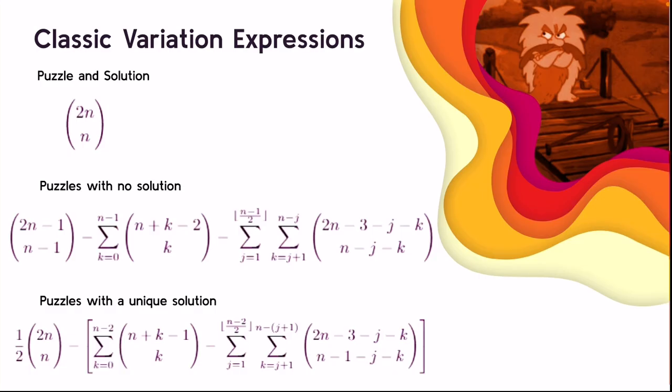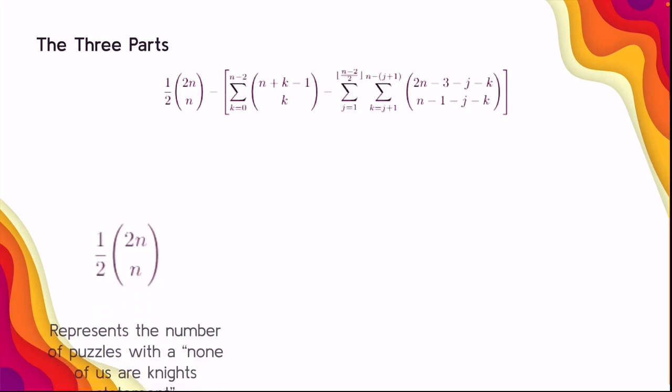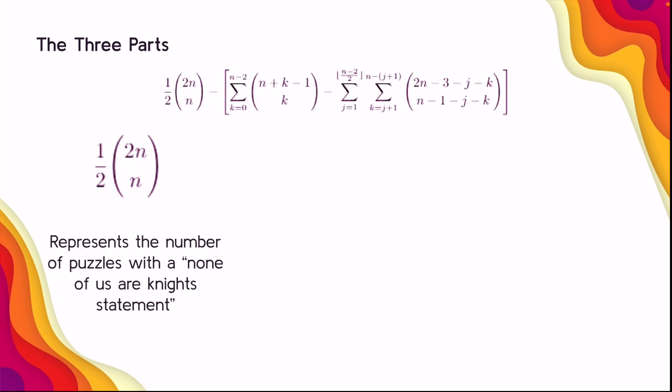For the classic variation, the puzzle and solution counts were already found by Levens and Roberts. We also found expressions for puzzles with no solution and puzzles with a unique solution. An important note: both of these expressions only work for n less than 7, so they apply to puzzles with up to six trolls. The puzzle count comes from a multi-choose expression — since a troll in the classic variation can say zero through n statements, that gives n+1 choices, simplified from n+1 multi-choose n to 2n choose n.